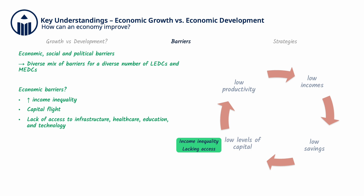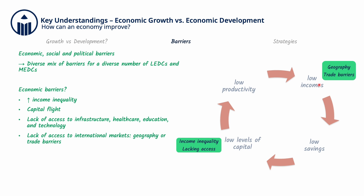The economic barriers that trap a country or community in low levels of income are lack of access to international markets, possibly due to geography or trade barriers enacted by trade partners, which increases the costs of producing and transporting exports and erodes the revenue gained from selling those exports on the global market. Other economic barriers that perpetuate the poverty cycle are having a large informal economy that is unregulated and untaxed, a high level of indebtedness, over-specialization in the production of primary products like oil or agricultural products, as well as tropical climates and endemic diseases.